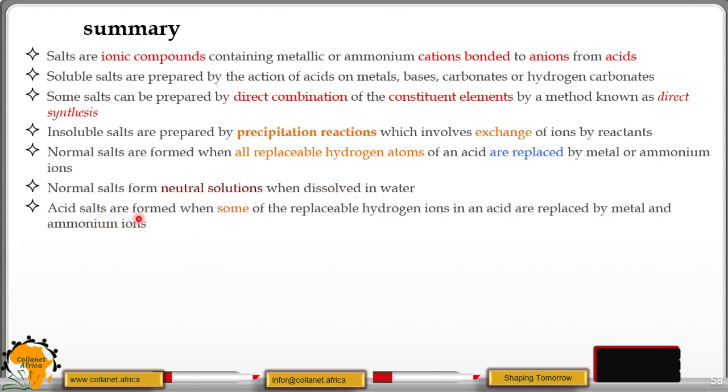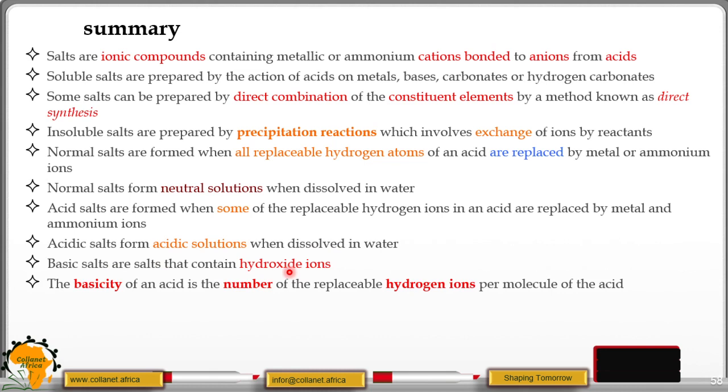Acid salts are formed when some of the replaceable hydrogen atoms in an acid are replaced by metal and ammonium ions. Acid salts form acidic solution when dissolved in water because they have hydrogen ions. Basic salts are salts that contain hydroxide ions.